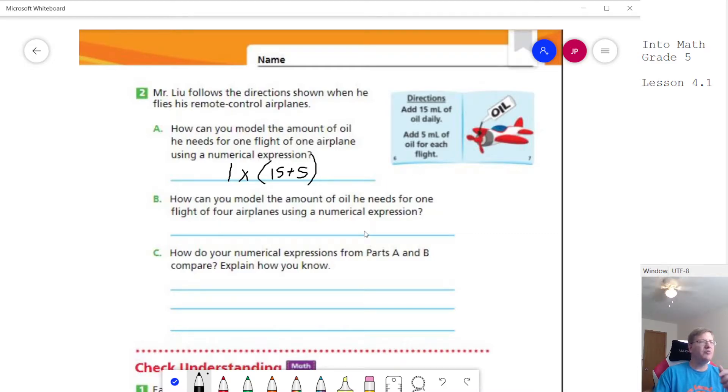How can we model the amount of oil we need for one flight of four different airplanes? So now we're talking about four different airplanes that we need to do this. Pause the video and think about this for a second. How would this particular expression change to represent going from one airplane to four airplanes?